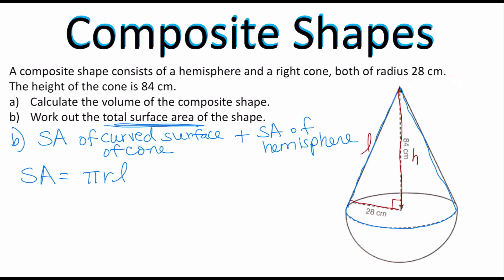Here is the slant height which is the hypotenuse of this triangle and the 28 is the radius. So I will be able to find slant height through Pythagorean theorem. We're going to hold that thought.